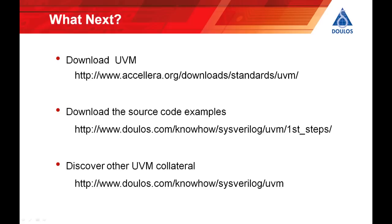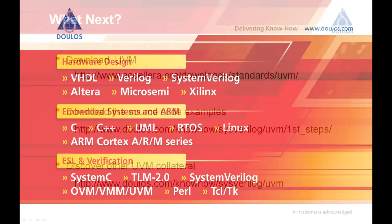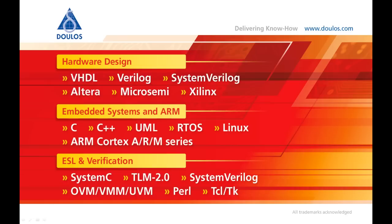You can download UVM itself from the Accellera Systems Initiative website, and you can download the Hello World source code for this particular video from the Doulos website — you will have to register if you haven't already. You can also get other UVM collateral, including the easier UVM tutorial material mentioned previously, from the Doulos website. At Doulos we deliver training classes throughout the USA, Europe, and Asia across a range of topics including hardware design and verification, FPGA technology, embedded software, ARM processor technology, SystemC and TLM, and of course SystemVerilog and UVM. Visit doulos.com for more details.